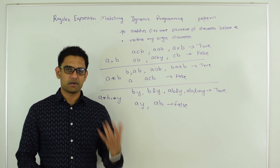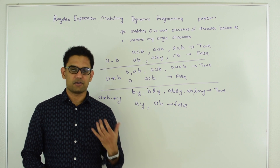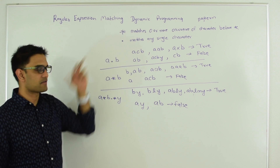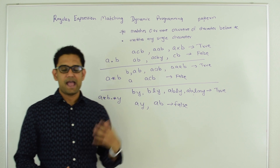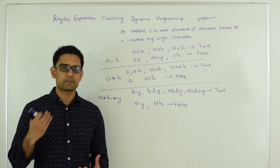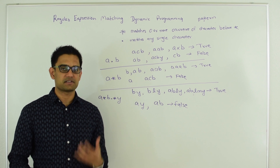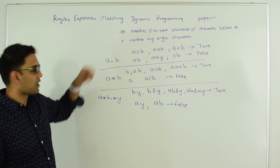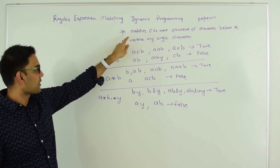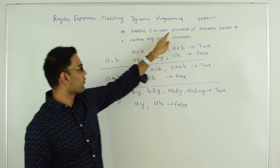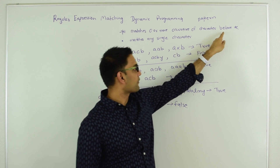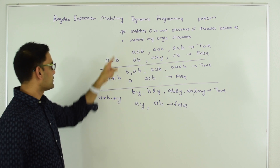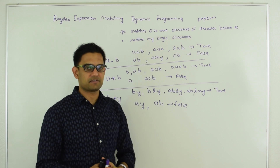The question is: you're given a pattern consisting of characters and two special characters, star and dot, and a text. You have to say if this pattern matches the text or not. Star matches zero or more occurrences of the character right before it, and dot matches any single character.